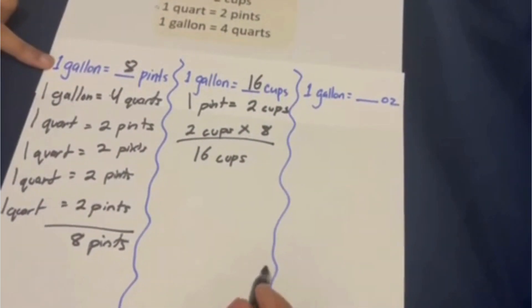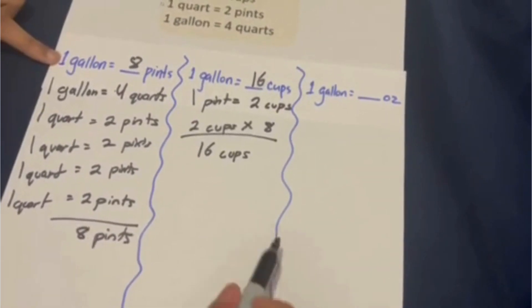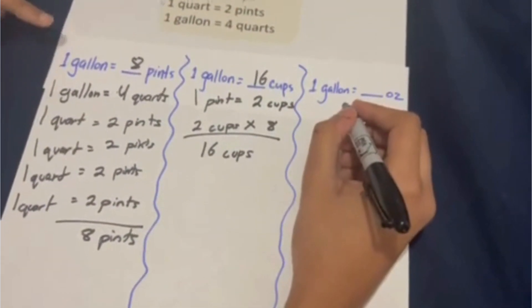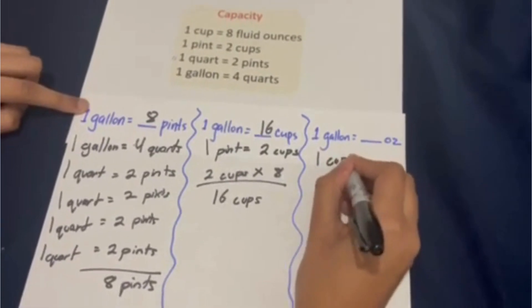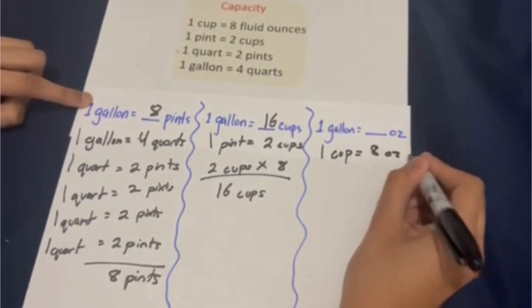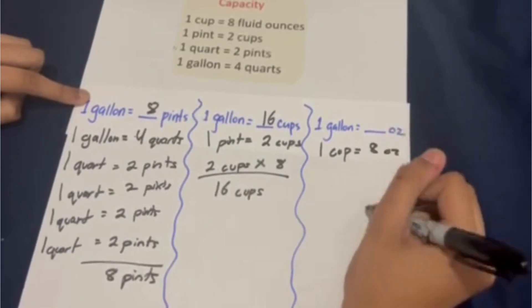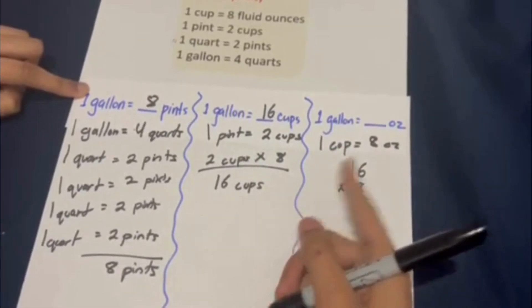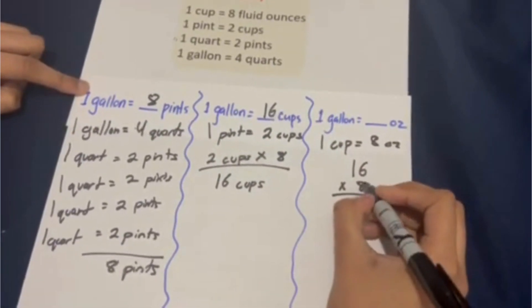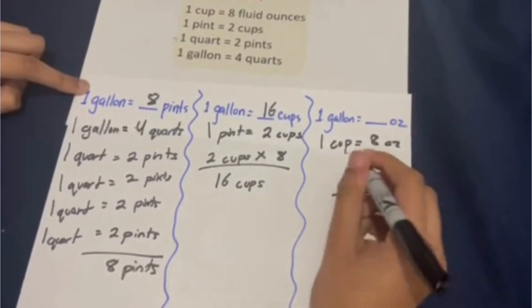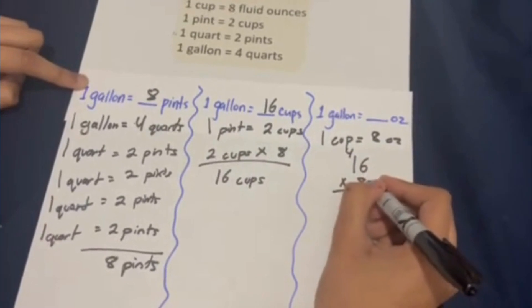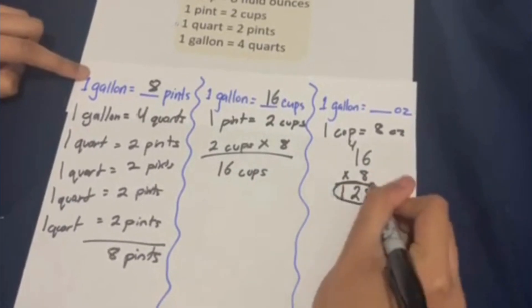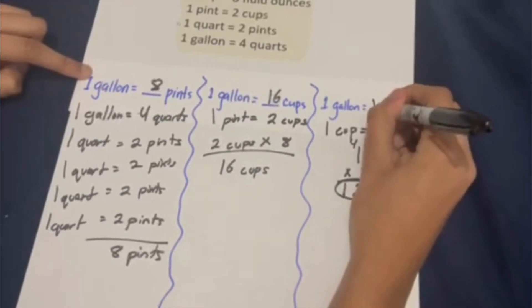Finally, how many ounces are in a gallon? We know that there are sixteen cups in one gallon, and we also know that one cup is equal to eight ounces. Meaning that we're going to have to do sixteen times eight — sixteen cups times eight ounces. Eight times six is forty-eight; put the eight and carry the four. Eight times one is eight, and then plus four is twelve. Meaning that there are one hundred and twenty-eight ounces in one gallon.